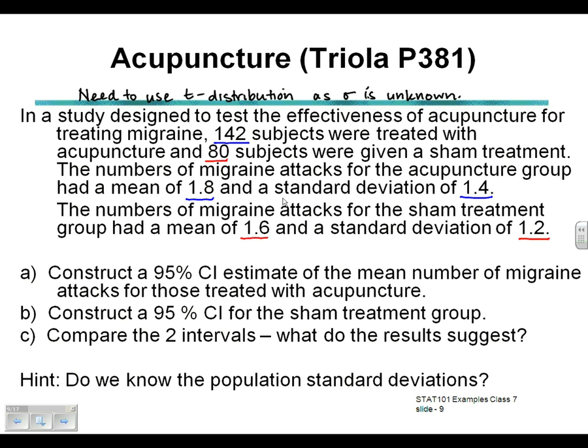In order to calculate these confidence intervals, we do not know the population standard deviation — so the key difference from the previous example is that sigma is unknown. Therefore, we need to use the T distribution to get our critical value.